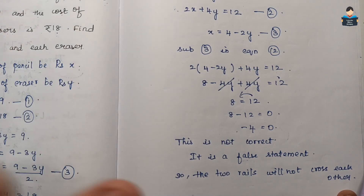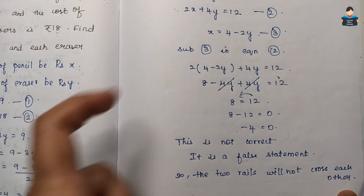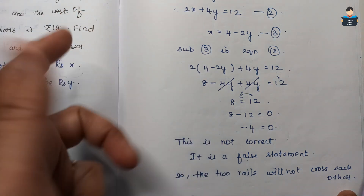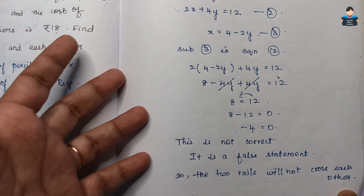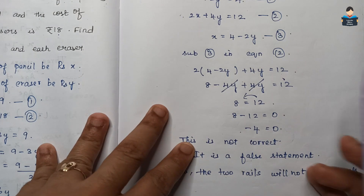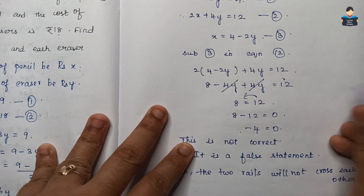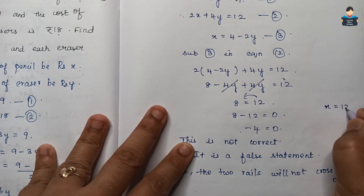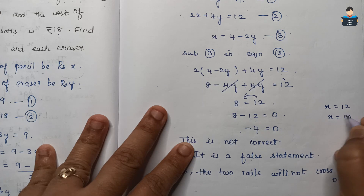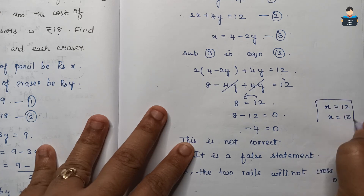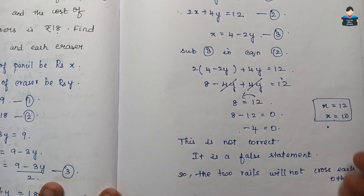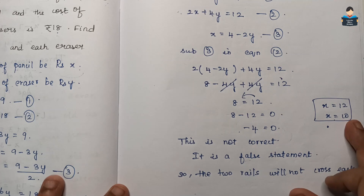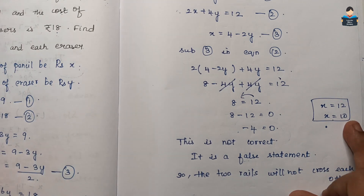When we get a particular value of x and a particular value of y — for example, x equals some specific number — that is called a unique solution.